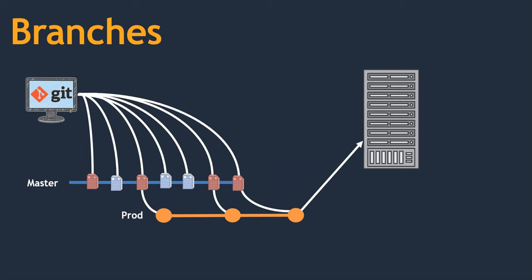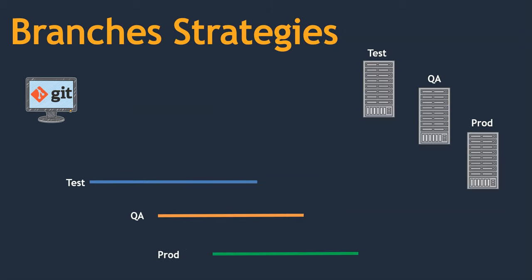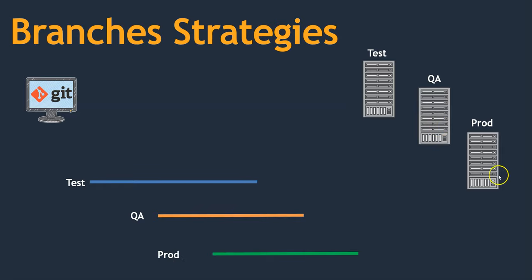In the previous lecture we discussed why we need branches. In this lecture we are going to see one branching strategy. In this method we have development, test, QA, and production branches, and at the same time we have test server, QA, and production systems.